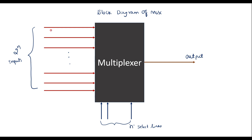Here I can call the data input lines as d0, d1, d2, and likewise we have 2 power n input lines, that is 0 to 2 power n minus 1 data lines. It has n select lines and only one output. Instead of d0, d1, d2, we can also use i0, i1, i2 — any variable can be considered.